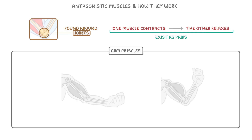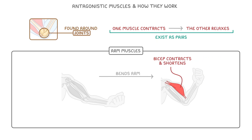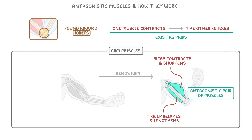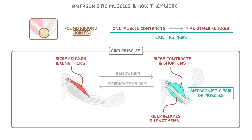So in our example here, when the person bends their arm, two things happen together. The bicep contracts and shortens, but then at the same time, the tricep relaxes and lengthens. Now because they work together like this, we say the bicep and tricep are an antagonistic pair of muscles. Then if the person wants to straighten their arm again, the opposite occurs — the bicep relaxes and lengthens, but at the same time, the tricep contracts and shortens.